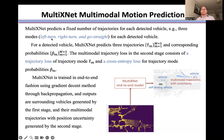MultiXNet predicts a fixed number of trajectories for each detected vehicle. For example, we have three modes: left turn, right turn, and go straight. For a given detected vehicle, MultiXNet predicts three trajectories and their corresponding probabilities. The multimodal trajectory loss in the second stage consists of a trajectory loss and a cross-entropy loss.